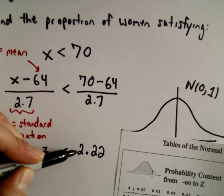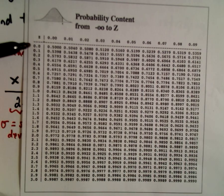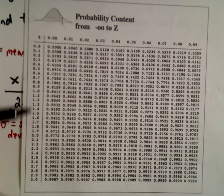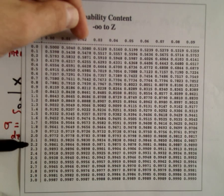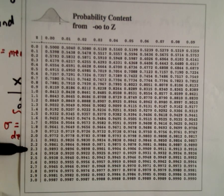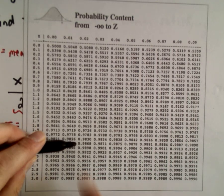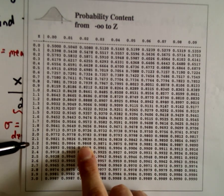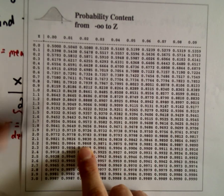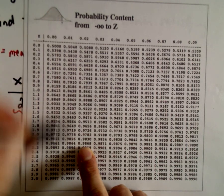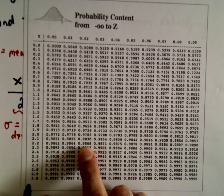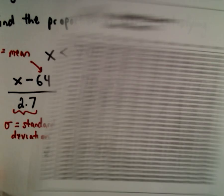I'm going to find the z-score of 2.22. On the left side I start by going down to 2.2, so there's 2.2. Now at the top it's telling me 0.00, 0.01, 0.02. If I go over to the third column, that's going to correspond to the z-value of 2.2, and then if we add on 0.02, that corresponds to 2.22. That value right there is 0.9868.